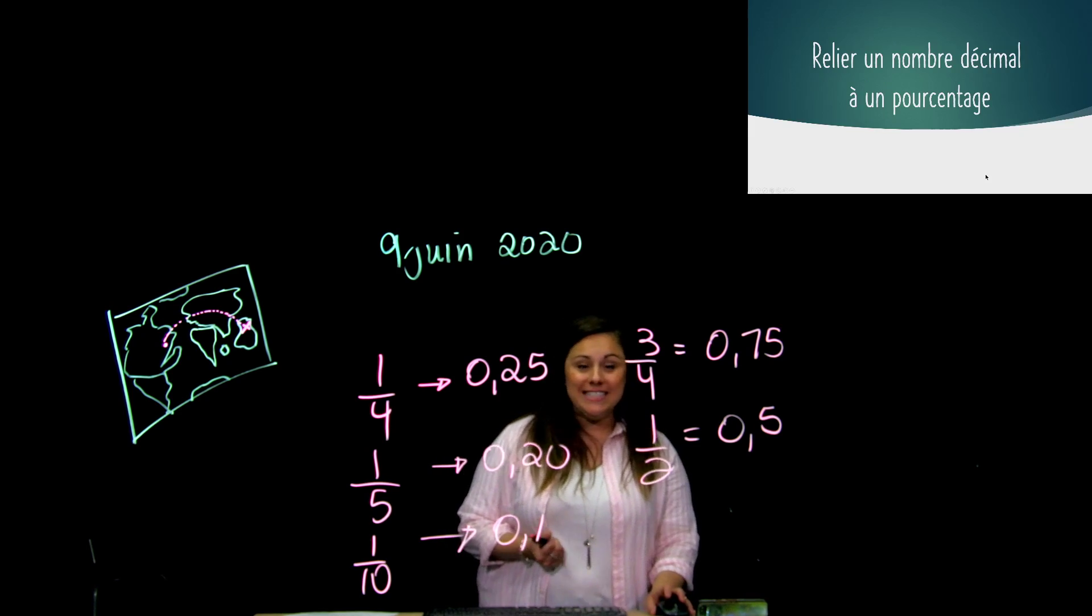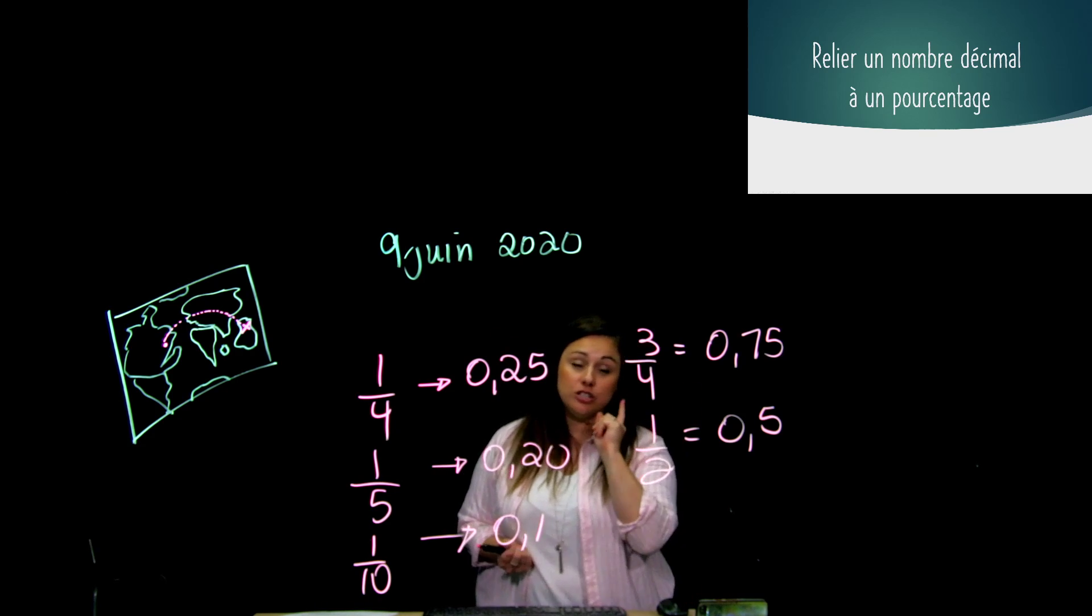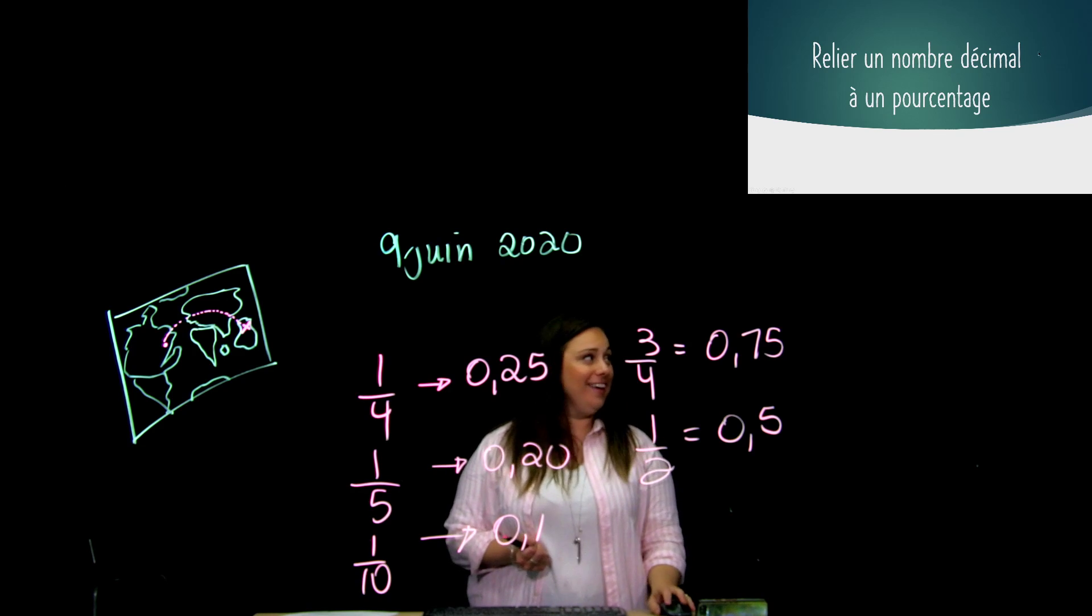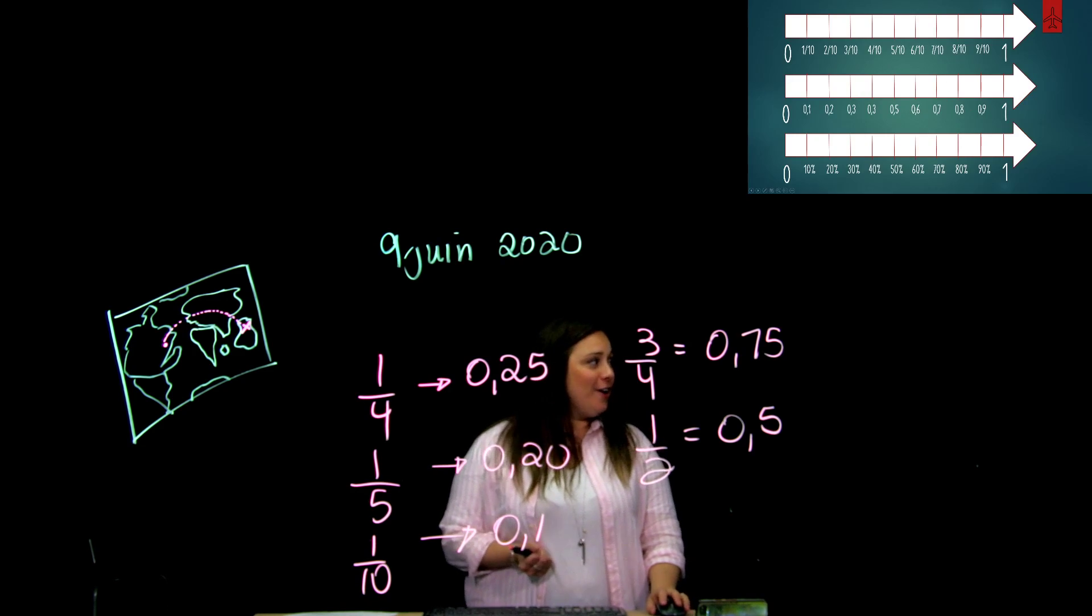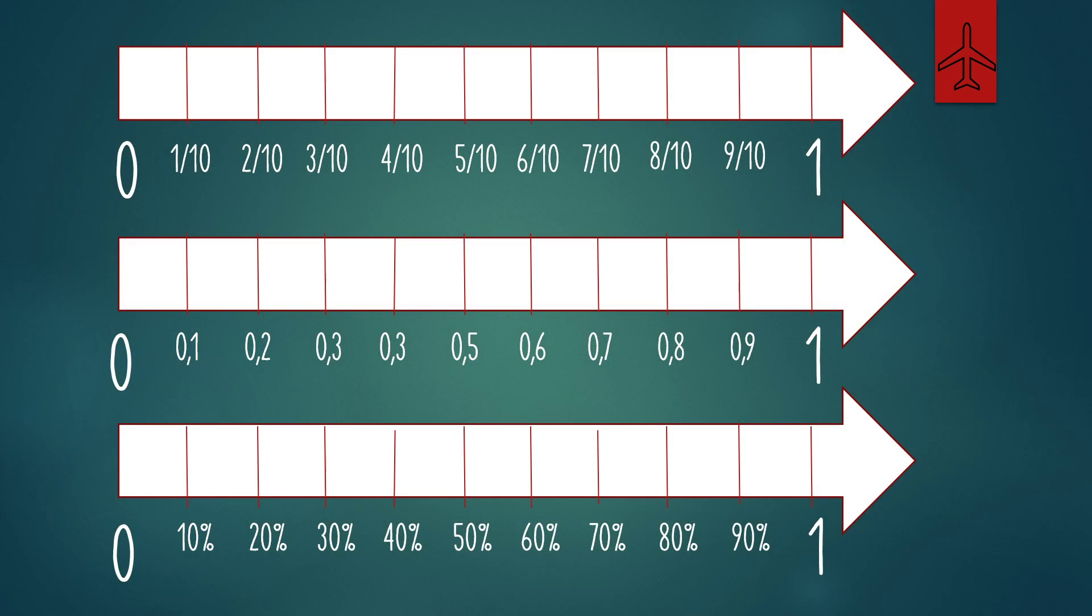Maintenant, voyons l'autre partie qui est comment je passe d'un nombre décimal vers un pourcentage, et ça, je t'ai dit, c'est la partie la plus facile. Alors, je te remets encore les droites numériques, les mêmes que tantôt, où je te disais qu'un dixième, c'était la même chose que 0,1, puis là, je te montre que c'est la même chose que 10%. Et tu peux utiliser ces droites-là. Moi, chez toi, je me ferais une grosse photo de ça, je me le mettrais dans mon cahier.